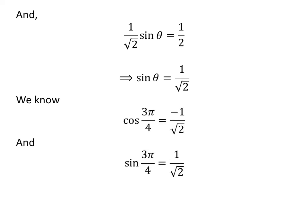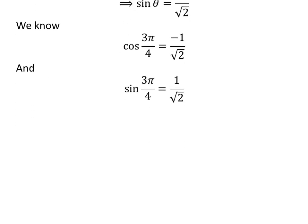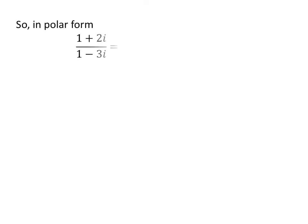We know cosine of 3 pi upon 4 is minus 1 upon square root of 2 and sine of 3 pi upon 4 is 1 upon square root of 2. So, the polar form of the complex number 1 plus 2 times i upon 1 minus 3 times i is equal to 1 upon square root of 2 times cosine of 3 pi upon 4 plus i times sine of 3 pi upon 4.